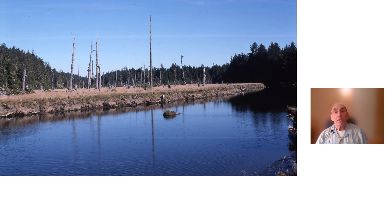The ghost forest in this picture was created by the great earthquake and tsunami that occurred around 9 p.m. on January 26th in the year 1700. The 1700 Cascadia earthquake occurred along the Cascadia subduction zone and had an estimated magnitude between 8.7 and 9.2. The megathrust earthquake involved the Juan de Fuca plate from mid-Vancouver Island in Canada, south along the Pacific Northwest coast as far as Northern California. The length of the fault rupture was about 1,000 kilometers or 620 miles and the average slip on the fault was 20 meters or 66 feet.